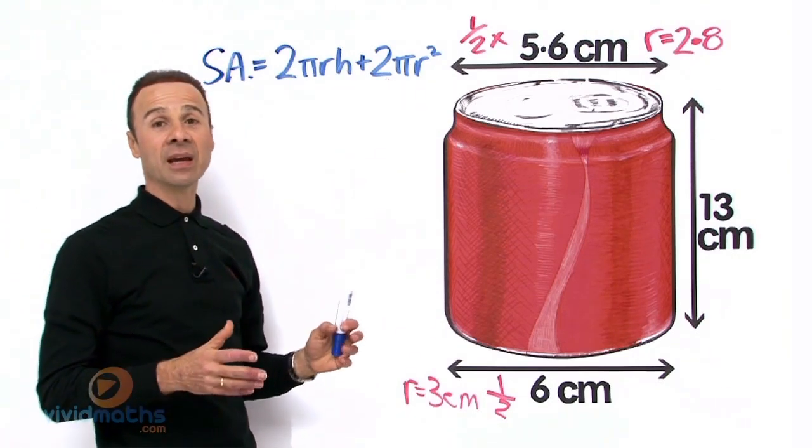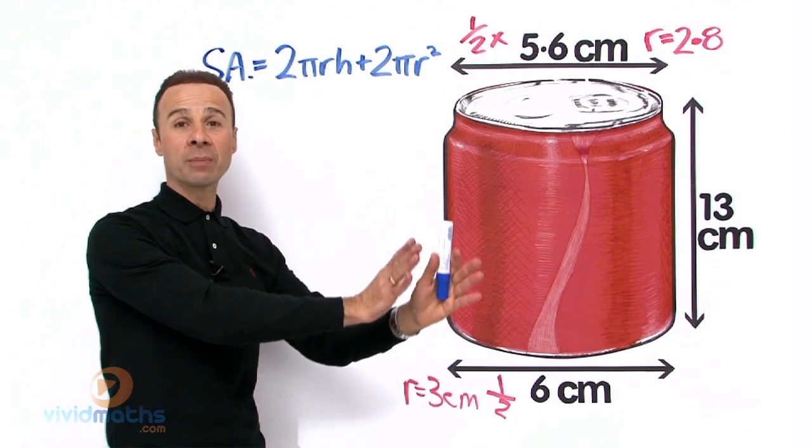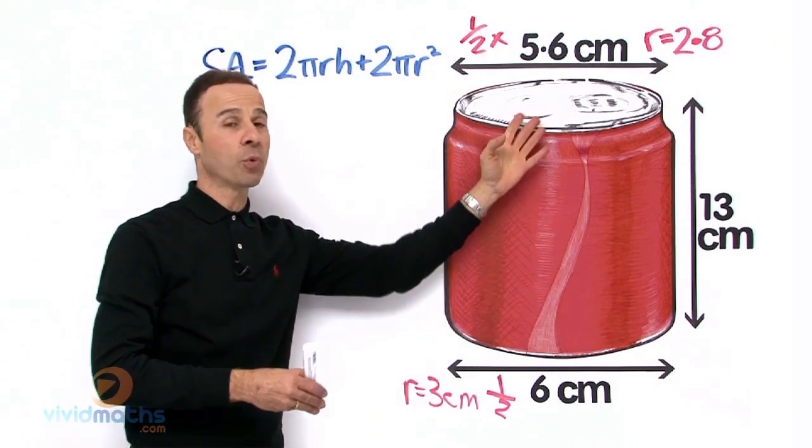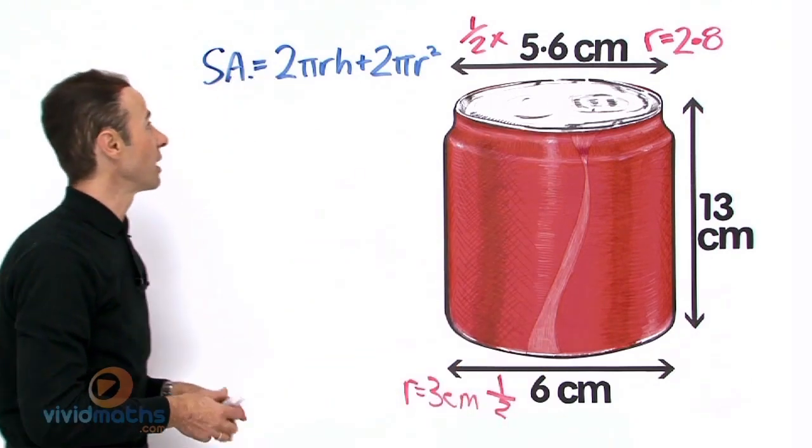Now we are going to separate them into 1πr² and 1πr², one being for the top, one being for the bottom. Let us do that now.